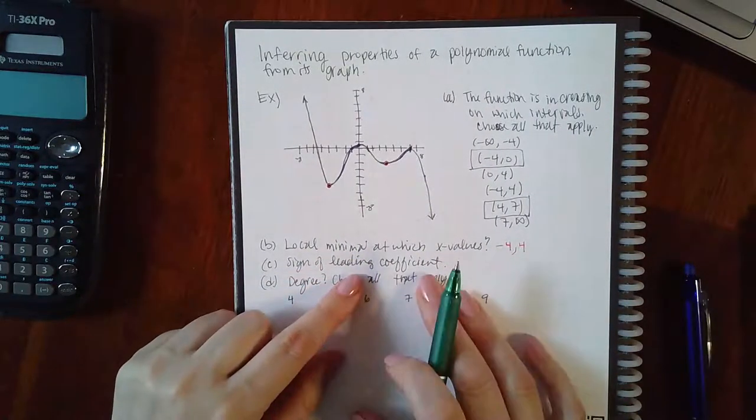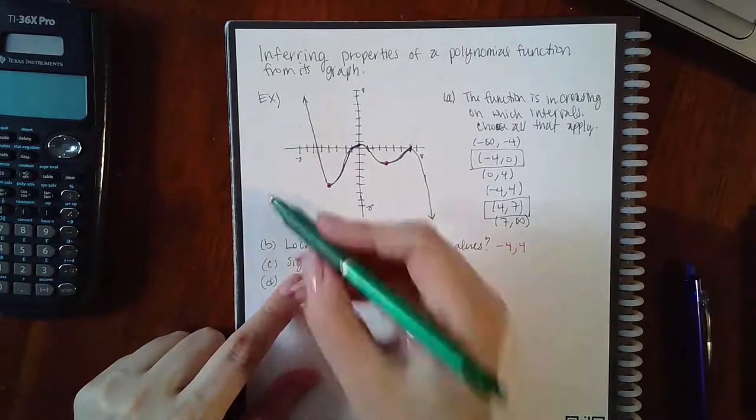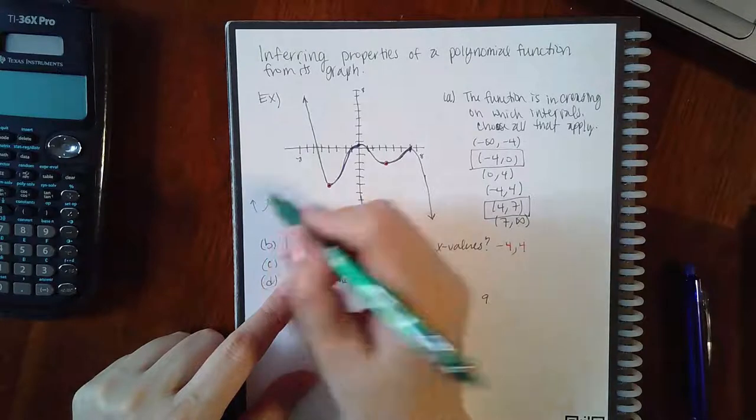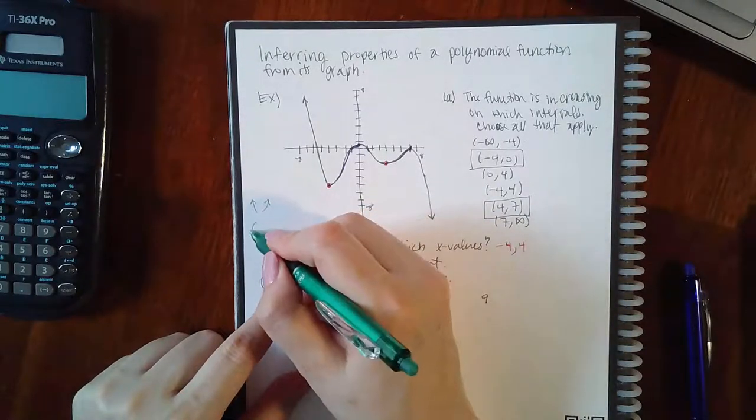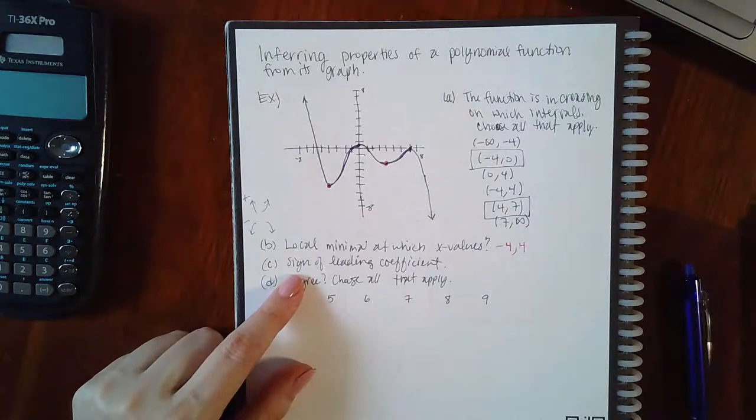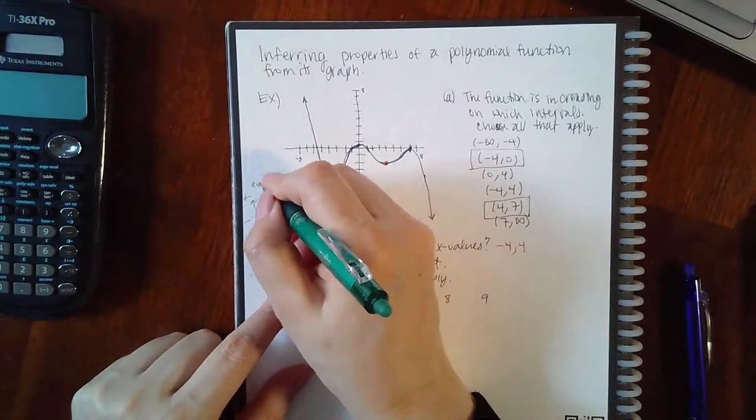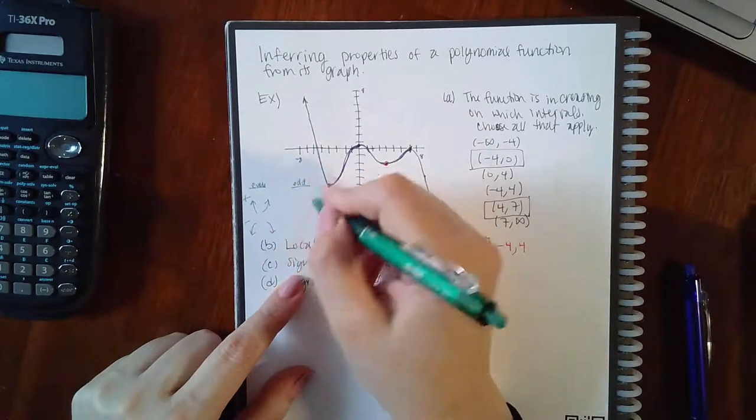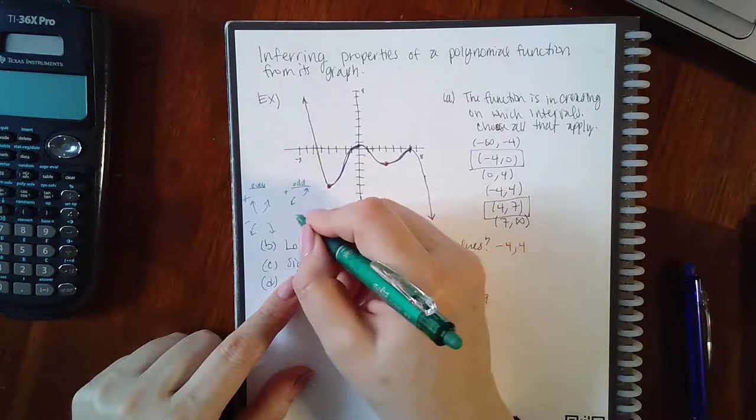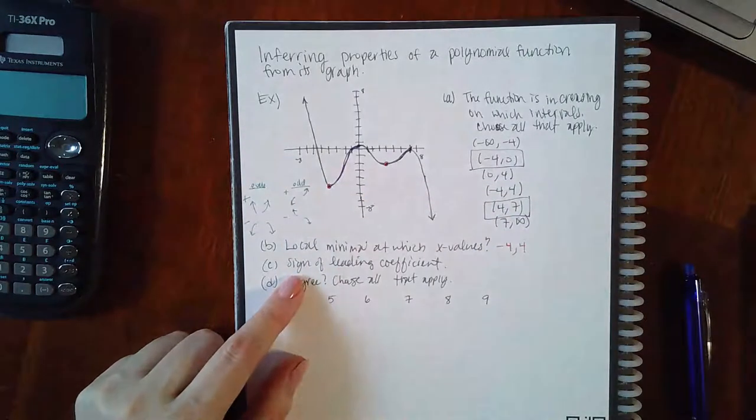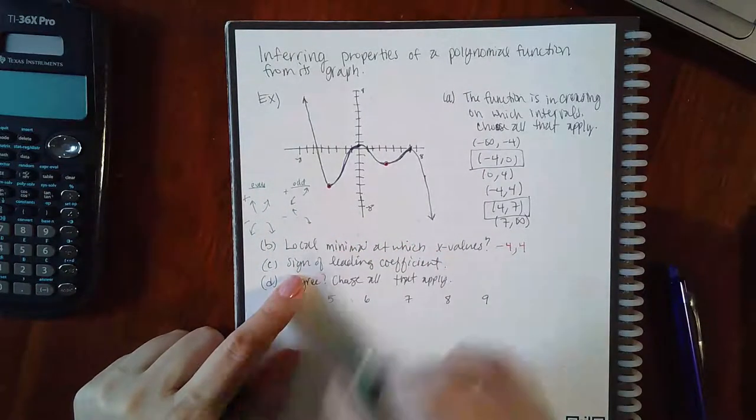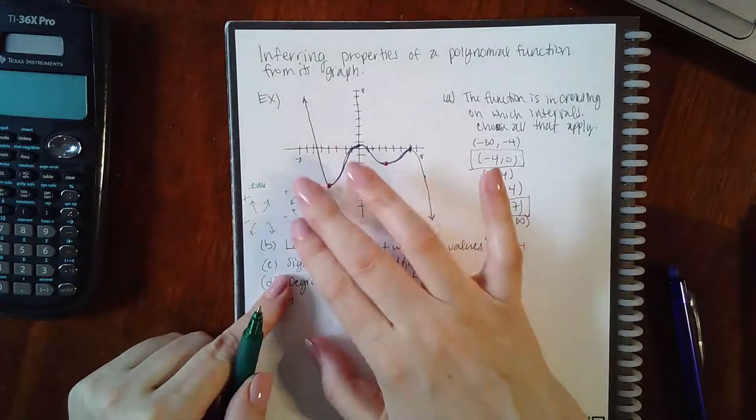Then the sign of my leading coefficient. Remember you have four choices to choose from. You have this end behavior, this end behavior. Here you have a positive coefficient, here you have a negative coefficient but the exponent is even. Or you have odd where it goes like this for the positive exponent and this for a negative, or positive coefficient versus negative coefficient.